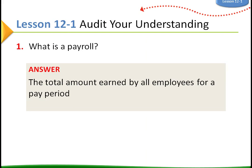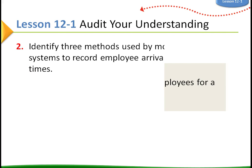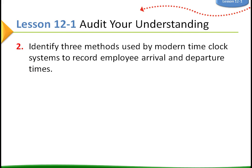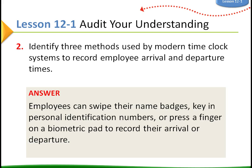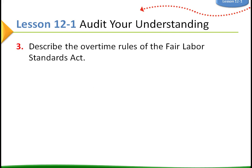Review questions: What is payroll? — The total amount earned by all employees for a pay period. Identify three methods used by modern time clock systems to record employee arrival and departure times: swipe your name badge, key in a PIN, press a finger to a biometric pad, or log into a computer.